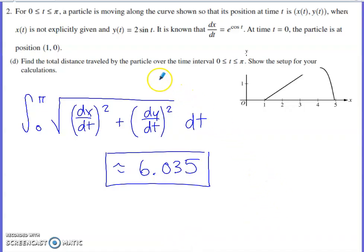The last part here, find the total distance traveled by the particle on the interval from 0 to pi. Show the setup for your calculation. When an object is moving in one dimension, back and forth on a line, you do the integral of the absolute value of velocity, which is speed, to get total distance traveled.